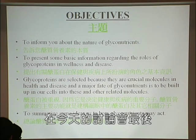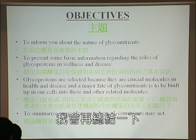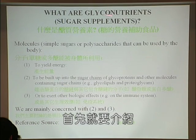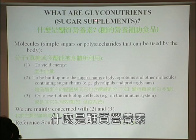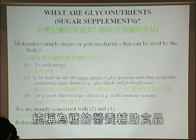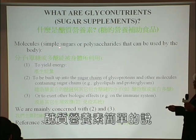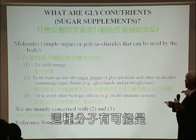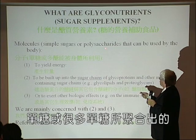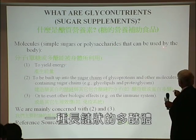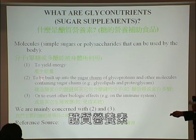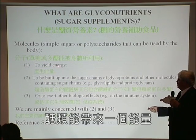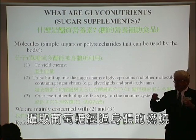At the end of my talk I want to summarize some ideas as to how glyconutrients act in the human body. So this slide asks the question: what are glyconutrients? Some people call them sugar supplements. They are molecules — simple sugars or long chains of sugars called polysaccharides, meaning many sugars linked together in a long chain — that can be used by the body for three different purposes. The first purpose, with which most of us are familiar, is to yield energy; for example, glucose yields energy.